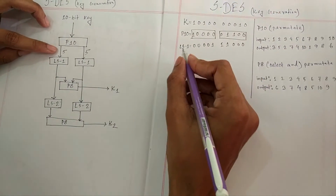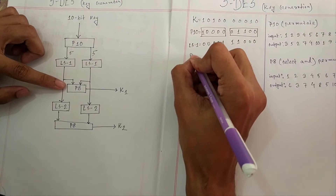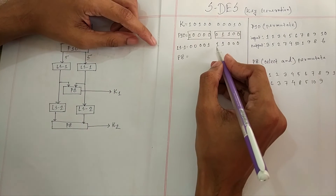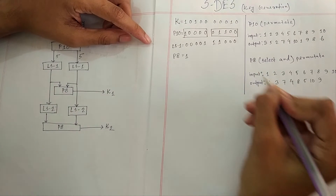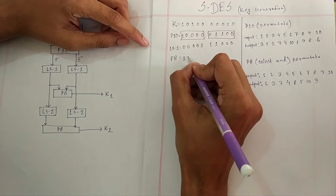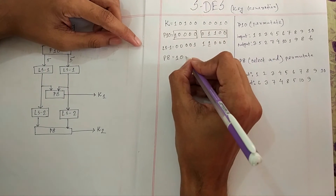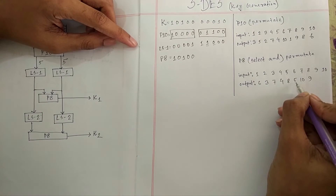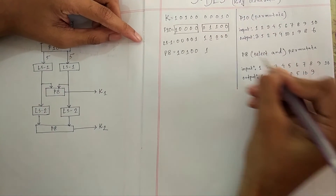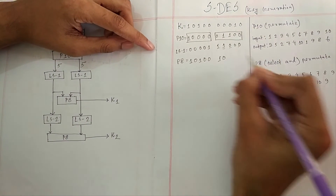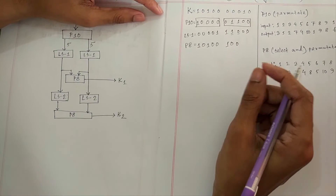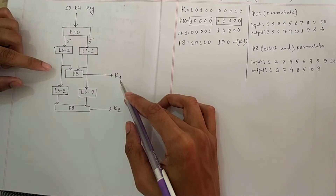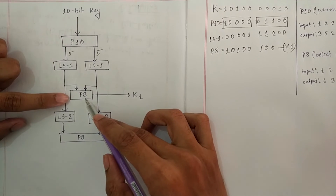From LS-1, we apply P8. The P8 output maps as follows: position 6 to 1 (value is 1), position 3 to 2 (value is 0), position 7 to 3 (value is 1), position 4 to 4 (value is 0), position 8 to 5 (value is 0), position 5 to 6 (value is 1), position 10 to 7 (value is 0), position 9 to 8 (value is 0). We have found the P8 value — this is Key 1.